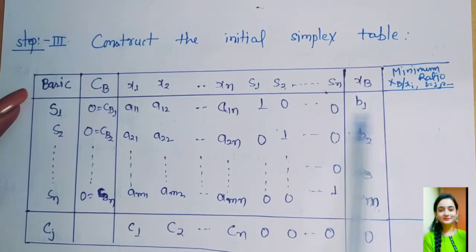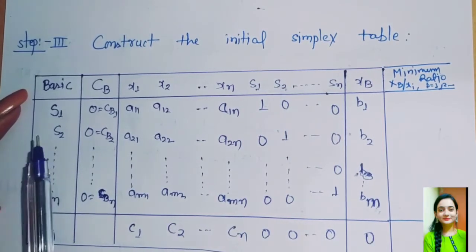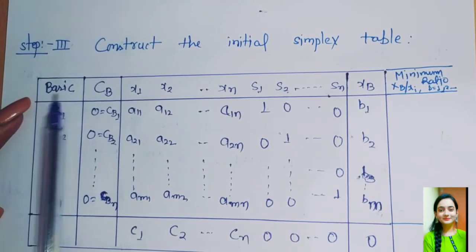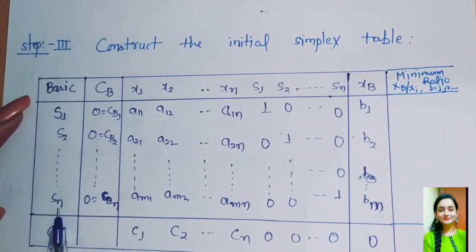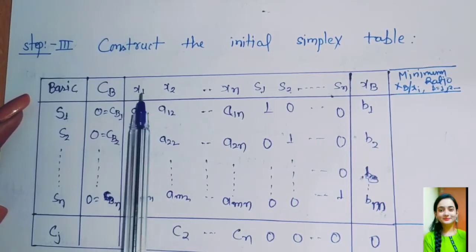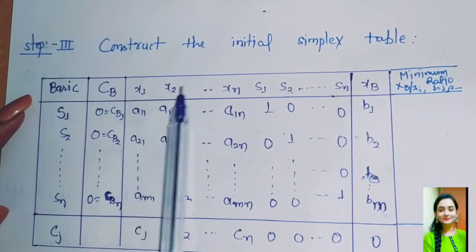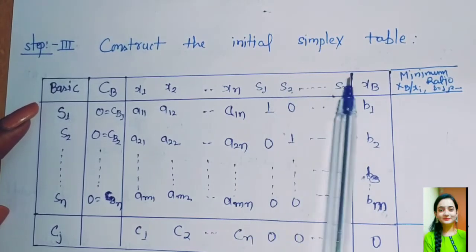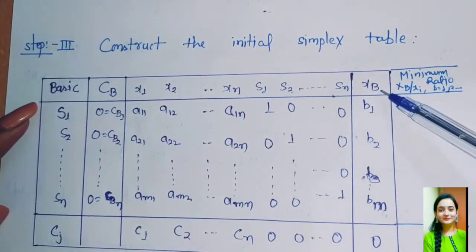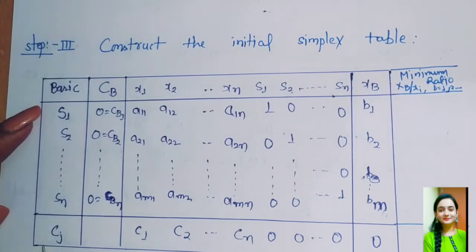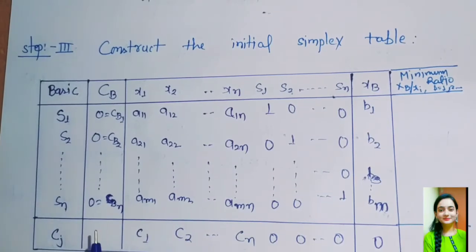Construct the initial simplex table. This is the tabular form of the initial simplex table. Here are four columns: First is basic variable s1, s2, up to sn. Second is cost of basic variable. Third is non-basic variables x1, x2, up to xn and basic variables s1, s2, up to sn. Fourth column is xb which is the right-hand side of constraints. And last row is cj, the cost of basic and non-basic variables in objective function.